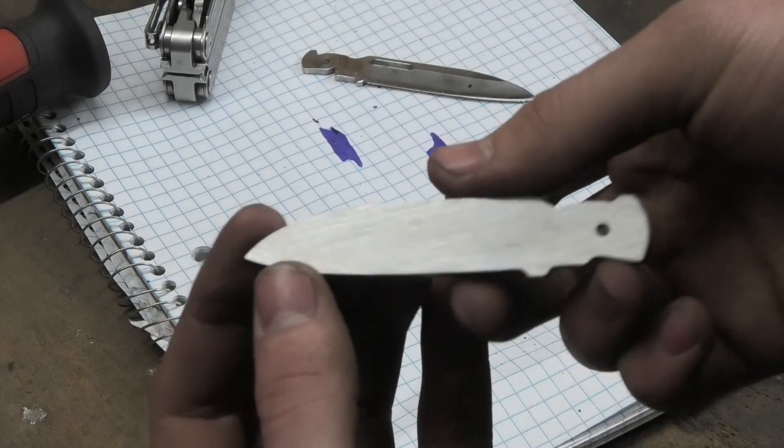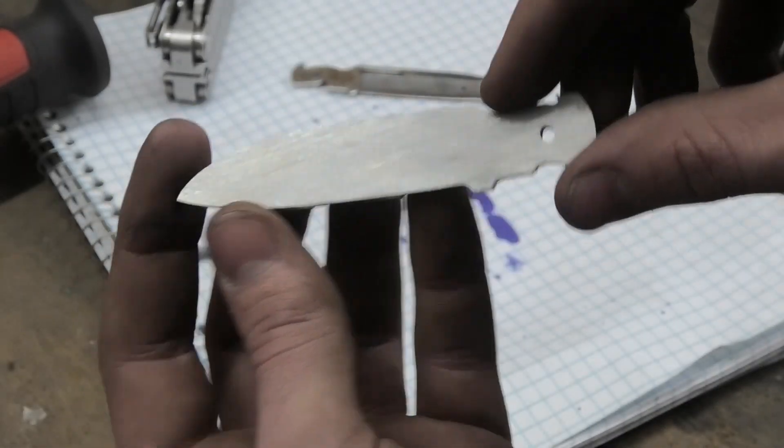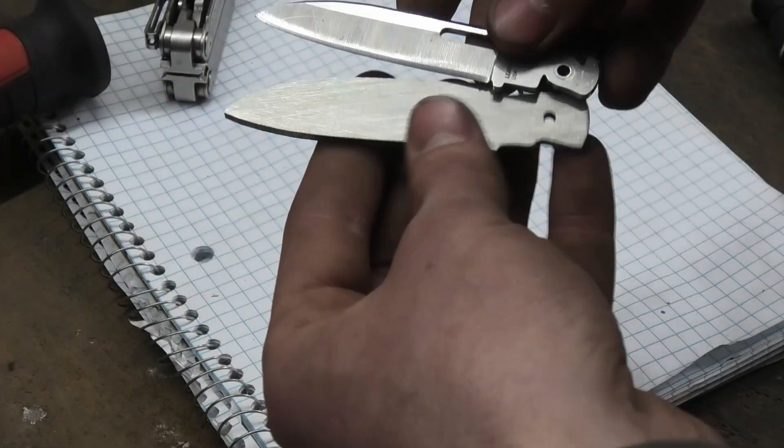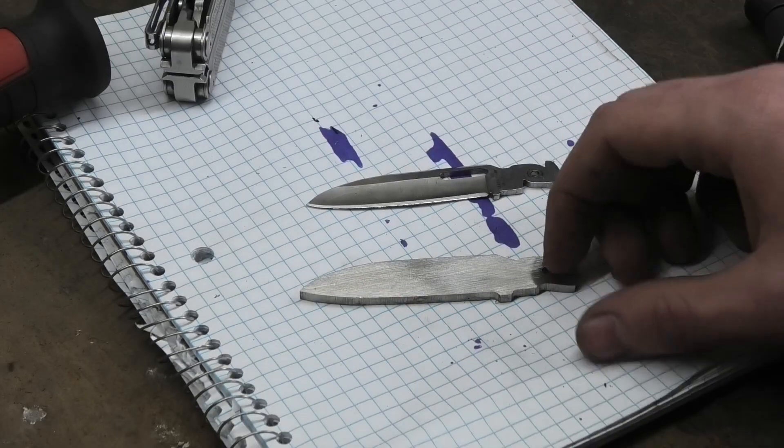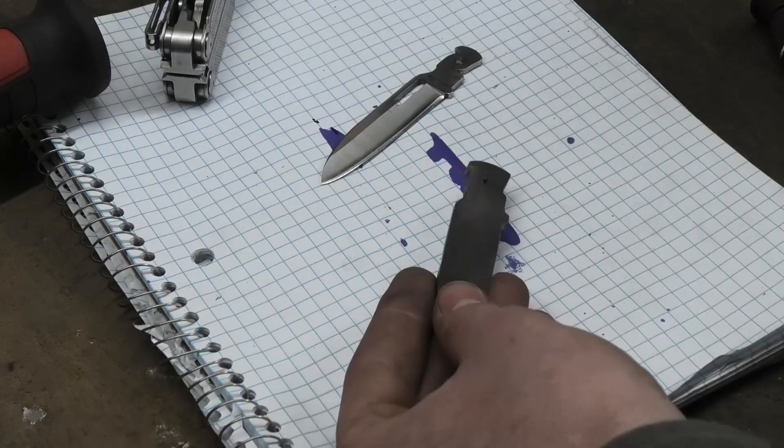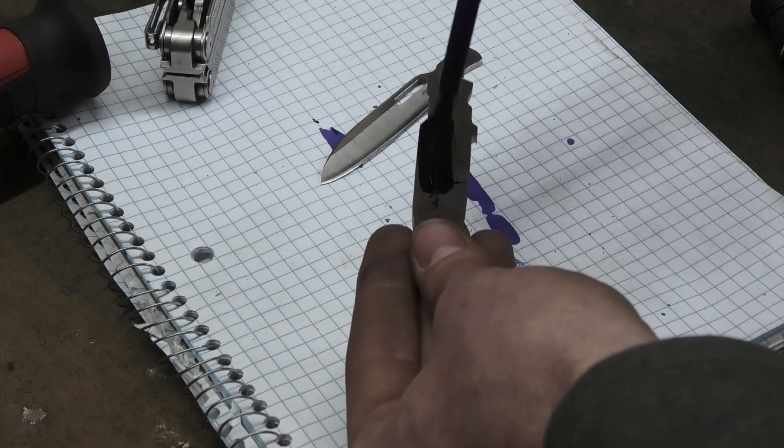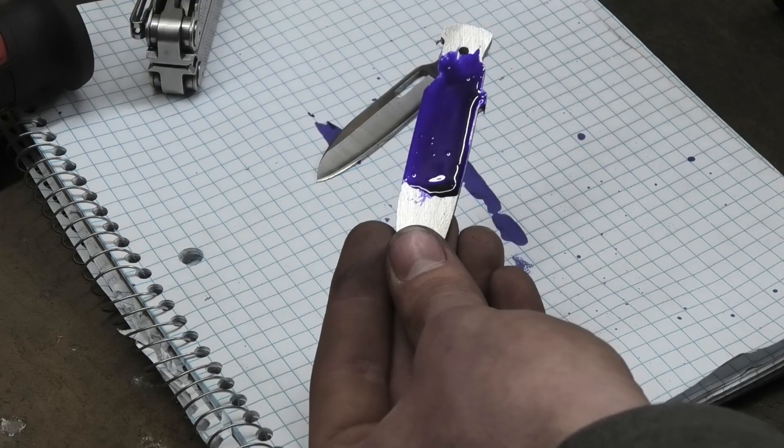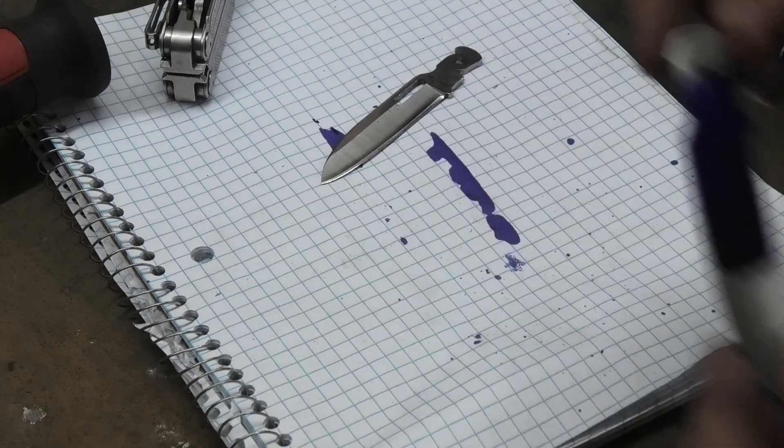So this thing is close to size and cleaned up a bit. I still have plenty of room because I do need to heat treat this, but before I heat treat it I do need to cut in this slot. And I'm not quite sure how I'm going to do that yet, but I know I do need to mark it out so I'm going to put some of this blue stuff on again and scribe that slot and mark that slot out onto this steel.